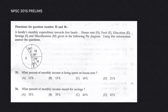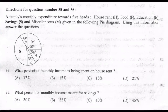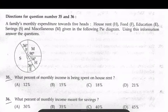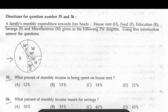This is a pie diagram question, Question 35. From this chart, we will be able to solve our family's monthly expenditure towards five categories: house rent, food — food is 36 degrees.